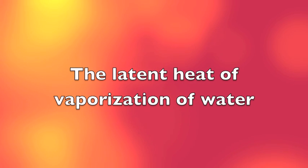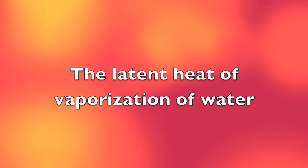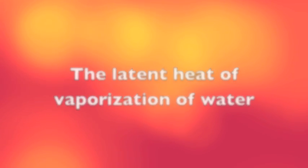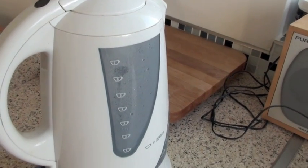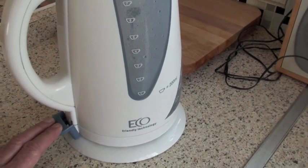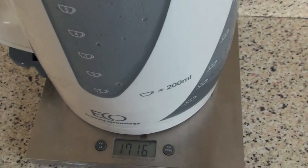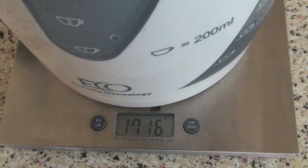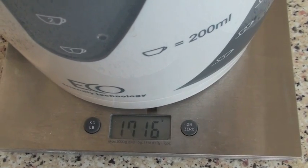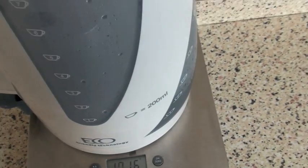We can use a very simple experimental demonstration to estimate the latent heat of vaporization of water. We make sure that the water in the kettle is boiling and that the whole of the kettle is hot. We quickly transfer the kettle to a digital balance and measure the mass. You can see here 1.716 kilograms.